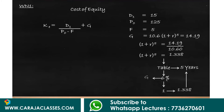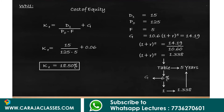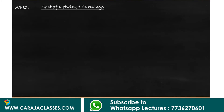Now we have all the information to find the cost of equity: 15 divided by (125 minus 5) plus 0.06, which gives a cost of equity of 18.5 percent. The second source is cost of retained earnings.